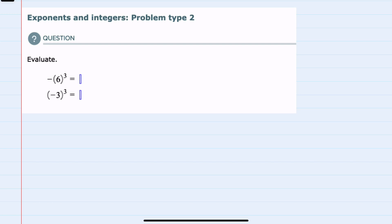In this video I'll be helping you with the Alex problem type called exponents and integers problem type 2. We're asked to evaluate two expressions, and starting with the first we have negative 6 cubed.